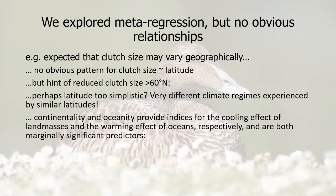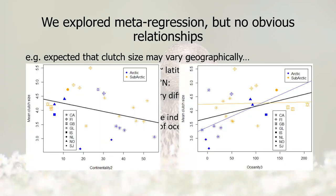Continentality and oceanality are indices for the cooling effect of land masses and the warming effect of oceans respectively, and both were found to be marginally significant predictors of clutch size. On the left, you can see that mean clutch size decreases with increasing continentality — so harsher conditions and shorter breeding season — and the opposite for oceanality. There is some hint that the oceanality effect may be strongest for those above the 60 degrees north line. However, the interaction was not significant.